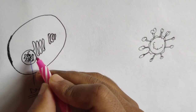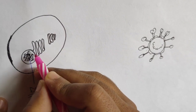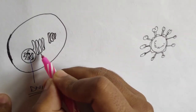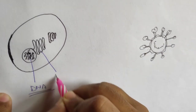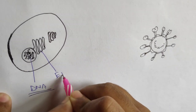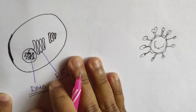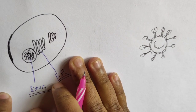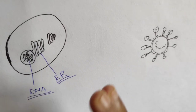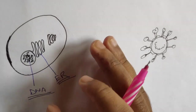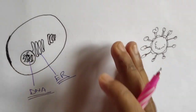Near the nucleus, there is a folding-like structure called the endoplasmic reticulum. It is a folding-like structure that helps to fragment and section the cell.